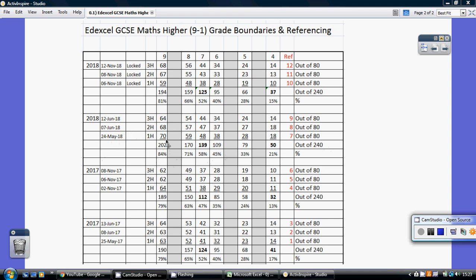For example, the papers that I've just uploaded from last summer, you needed to get a total of 202 to get a nine, which equates to 84 percent.